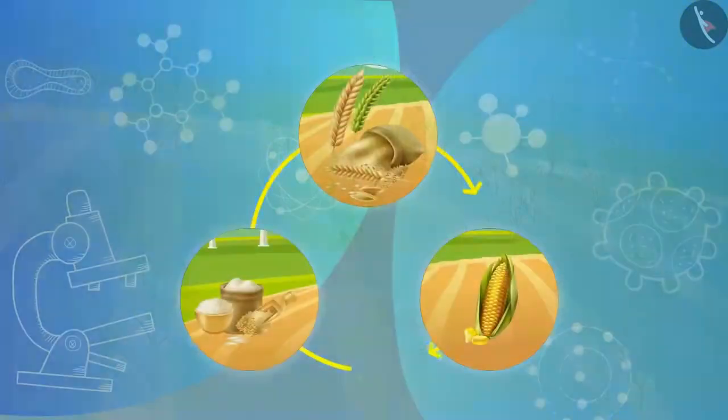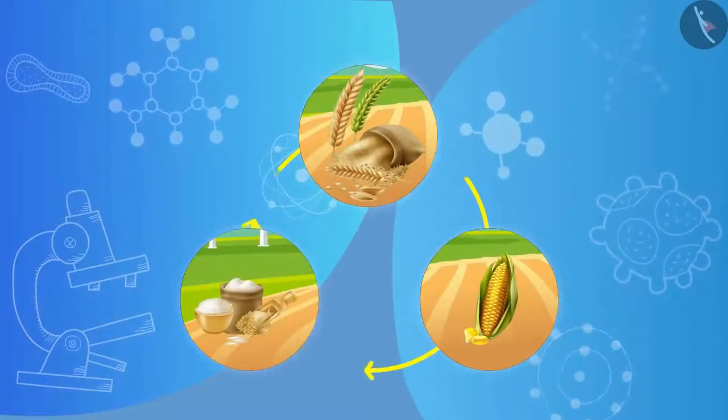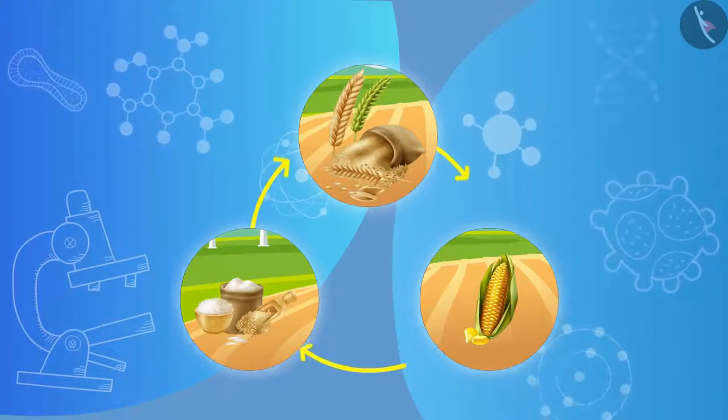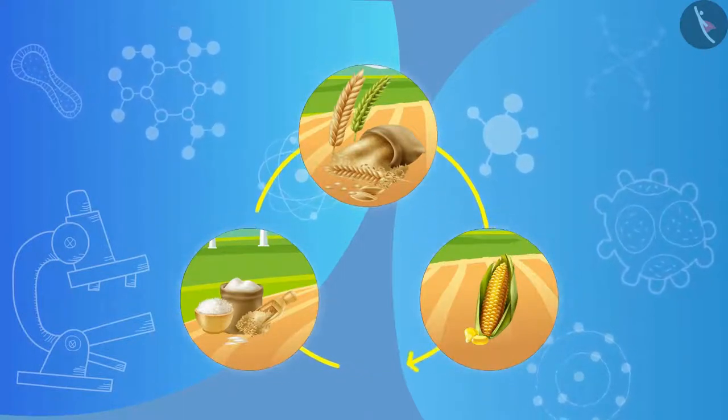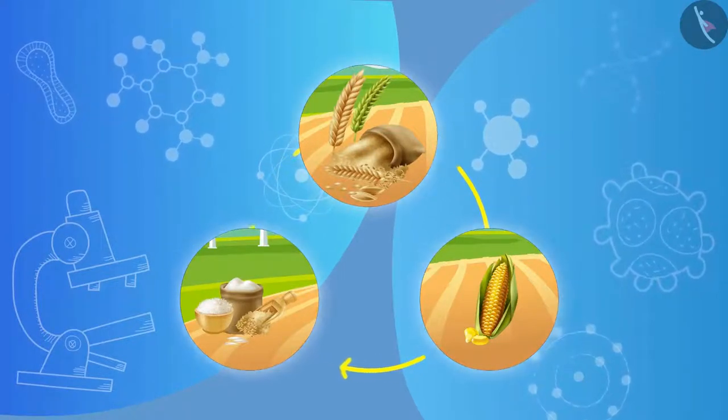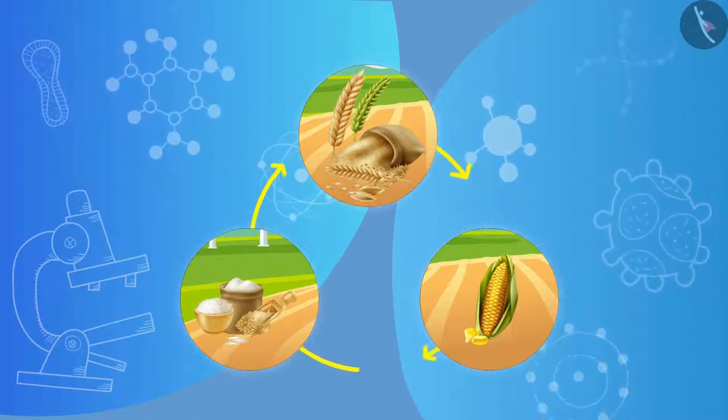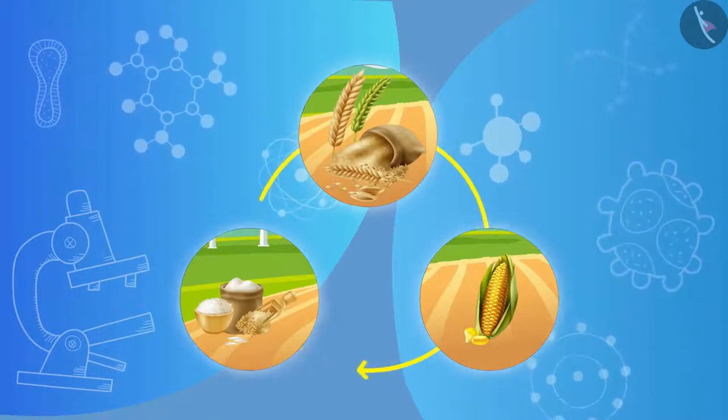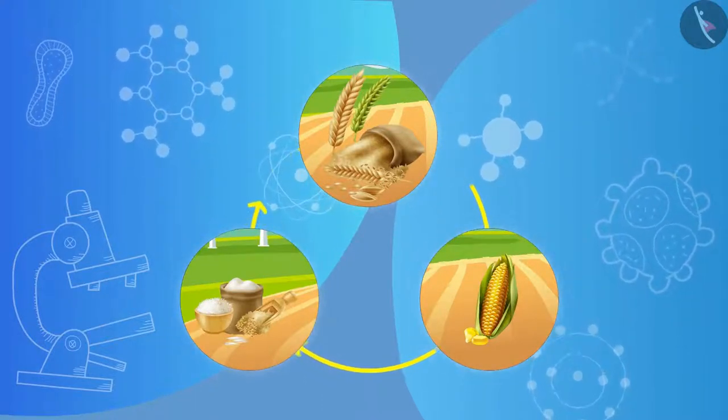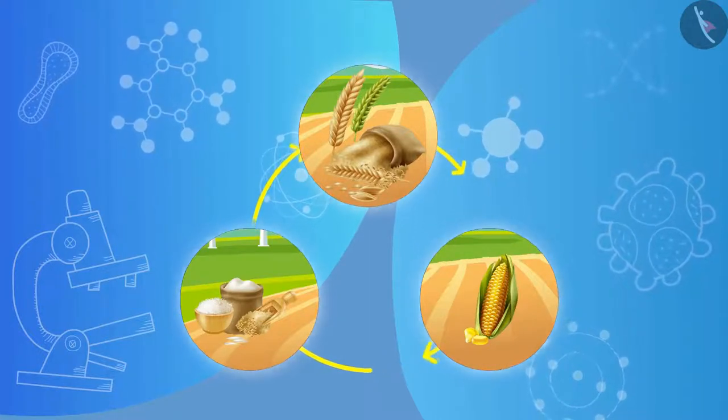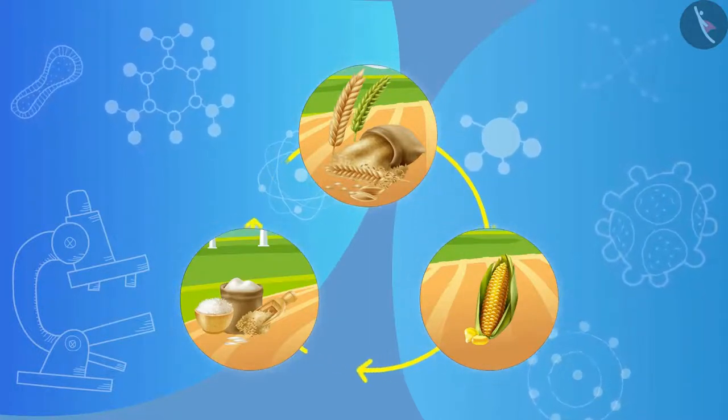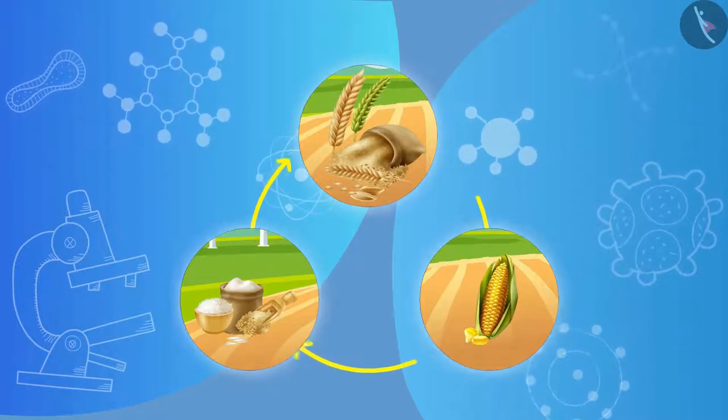Crop rotation: in this method different types of plants are grown in a cyclic manner on the same land. This is done so that soil is not used for only one set of nutrients and it increases crop production. So you have seen how crop production can be increased in various ways.